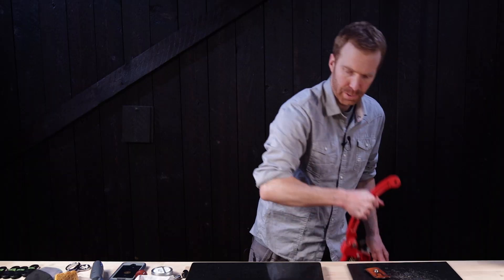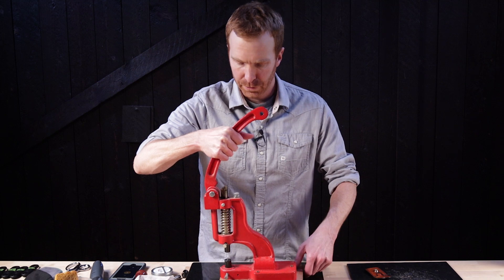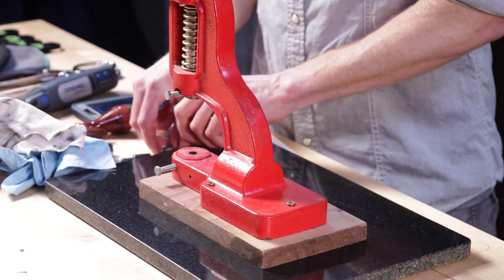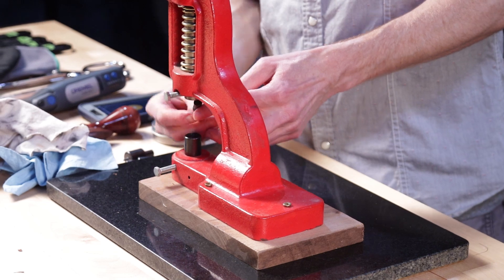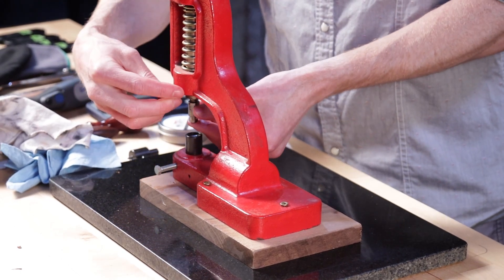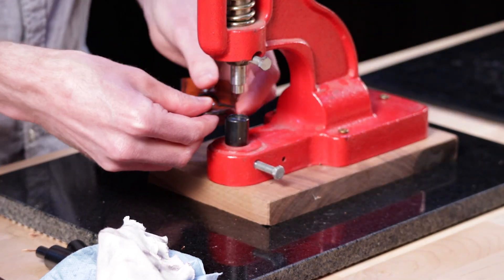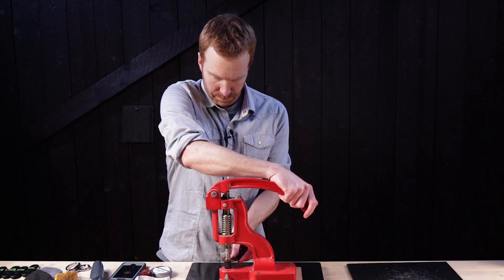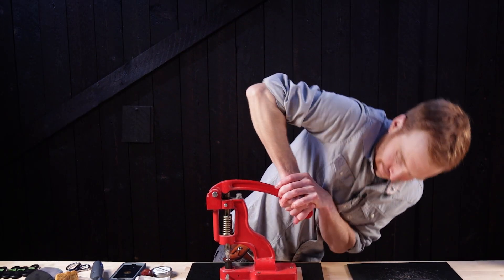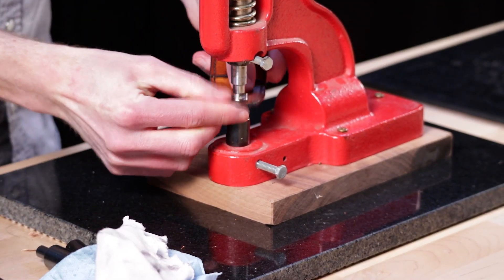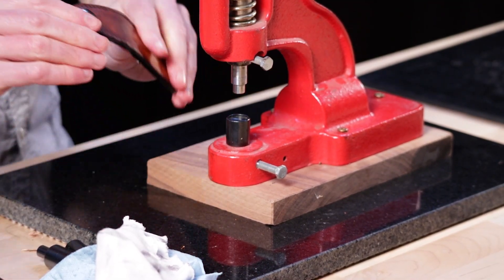All right. Now we just need to install the female snap. So I'm going to take these guys out of there. Again I'm using a line 24 snap. Looks good.